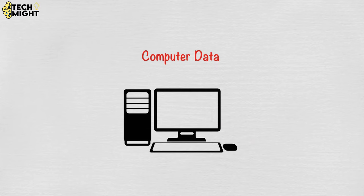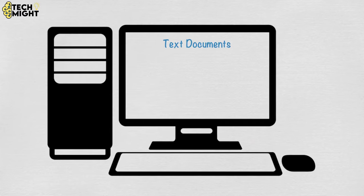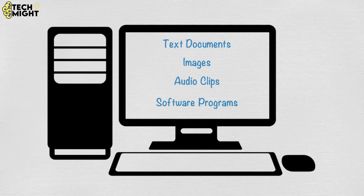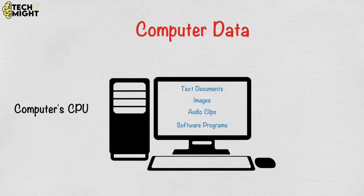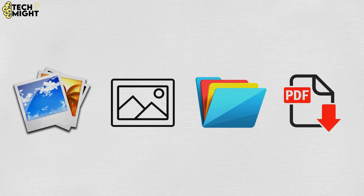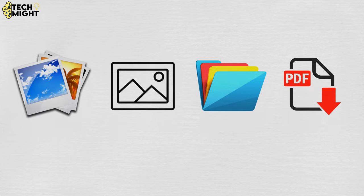Computer data is information processed or stored by a computer. This information may be in the form of text documents, images, audio clips, software programs, or other types of data. Computer data may be processed by the computer's CPU and is stored in files and folders on the computer's hard disk. A picture, image file, PDF, etc. can also be considered data.